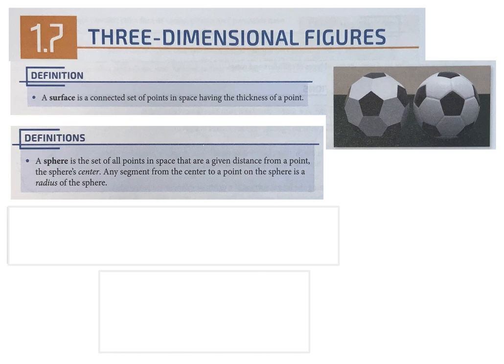A sphere is in space — it's the set of points equidistant from the center in space. A plane is going to create a circle; space is going to create a sphere. It's still the set of points equidistant from the center, but whether it's in a plane gives you a circle, or in space gives you a sphere. Anytime they talk about space, they're talking about a third dimension, not just length and width.